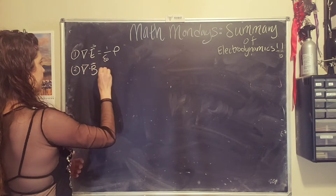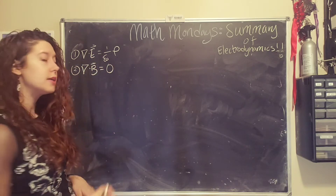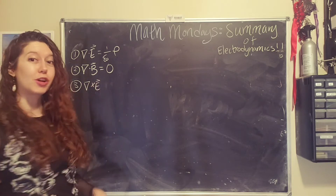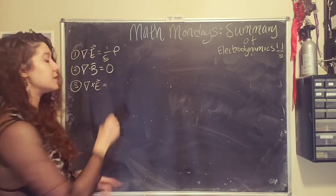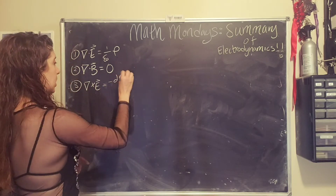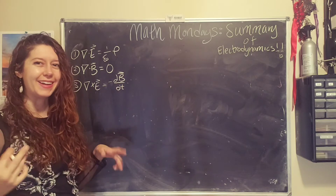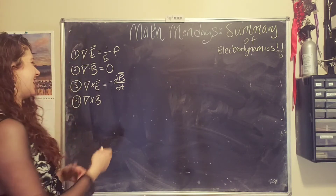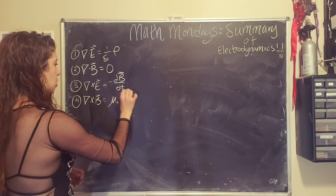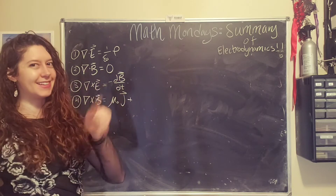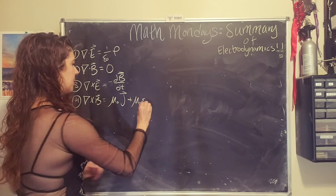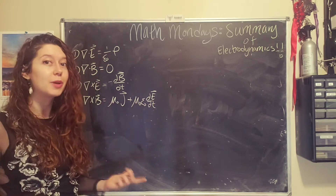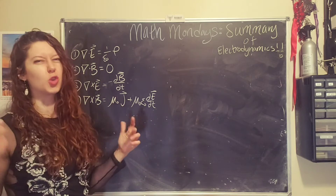And the divergence of the magnetic field is zero always. Then we have Faraday's law, which tells us that the electric field does have a curl component — some rotational component — if there is a changing magnetic field. And number four: the curl or the swirly part of the magnetic field is due to currents or moving charges, or, as Maxwell discovered, if you have an electric field that changes over time. So this one is actually Ampere's law with a correction from Maxwell.